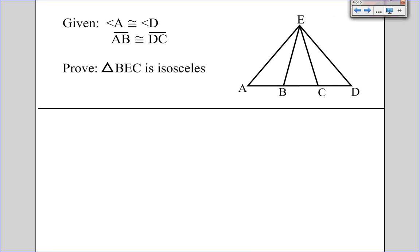So let's try two proofs. I want you to pause and try this one out before we go through it. We have angle A is congruent to angle D, and AB is congruent to DC. If A is congruent to D, that means in the big triangle, if base angles are congruent, then legs are congruent. So it looks like we can actually prove these two outside triangles congruent by SAS.